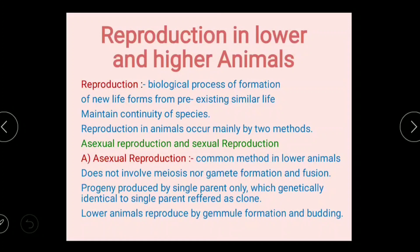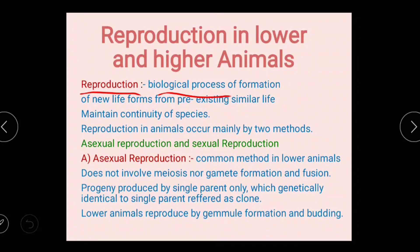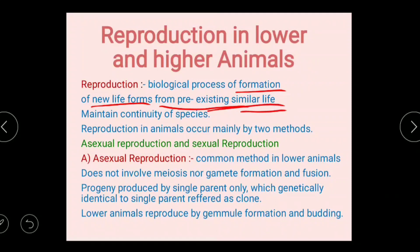Reproduction in Lower and Higher Animals. First, the definition of reproduction: it is a biological process of formation of new life forms from pre-existing similar life. Reproduction is the production of new life, but from pre-existing similar life, and it means the continuity of species.